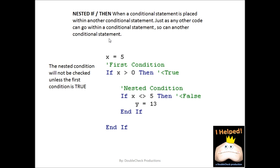Here we have a nested if-then statement — think of it like a screening process. We have x equals 5. The first condition is: is x greater than 0? The answer is true, so we go to our next question. Is x not equal to 5? Well, x equals 5, therefore that statement is false. Therefore y is not assigned a value and returns empty. However, if we change this to if x equals 5, then this condition would have been met.